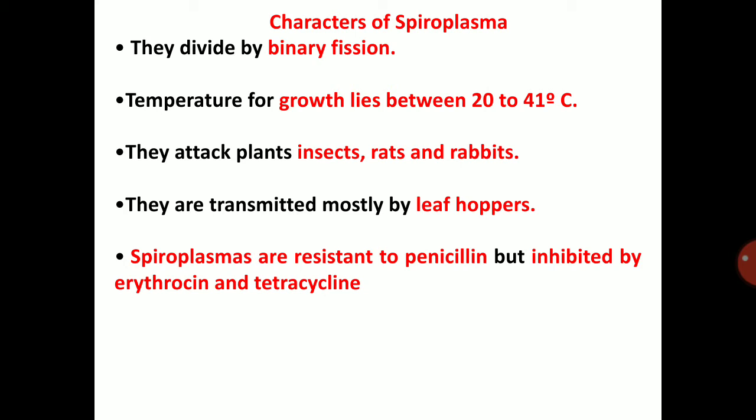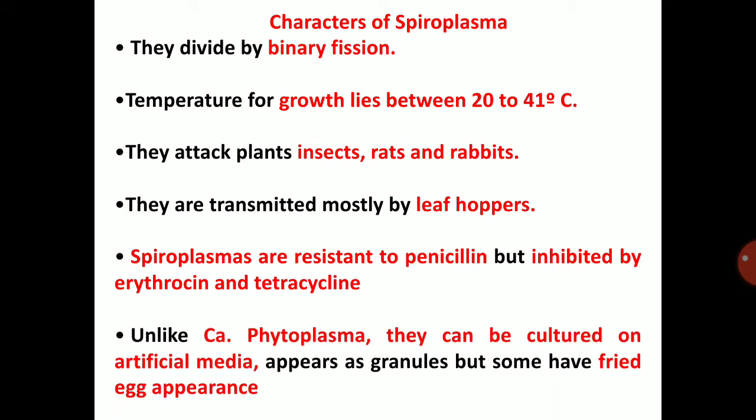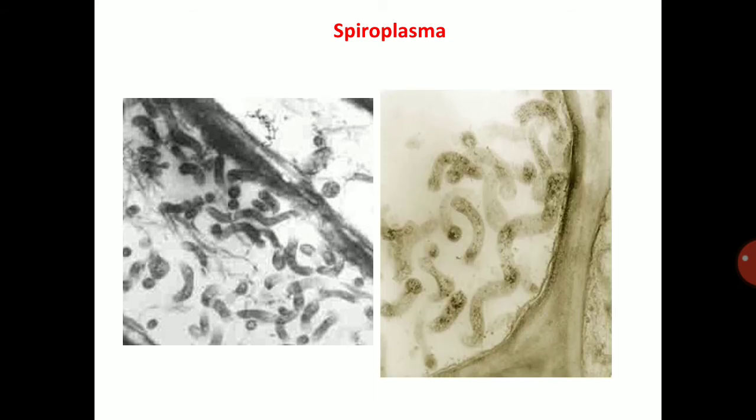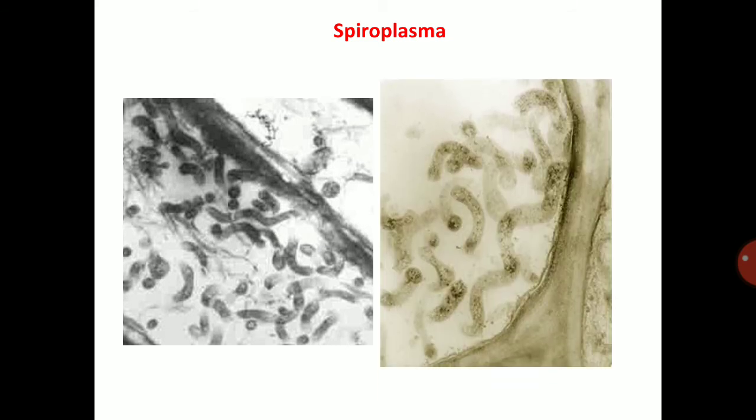So we can control the spiroplasmal disease by erythromycin and tetracycline. Unlike Candidatus Phytoplasma, Spiroplasma can be cultured on artificial media and appears as granules but somewhat fried-egg appearance. Spiroplasma is a spiral-shaped, wall-less bacteria.